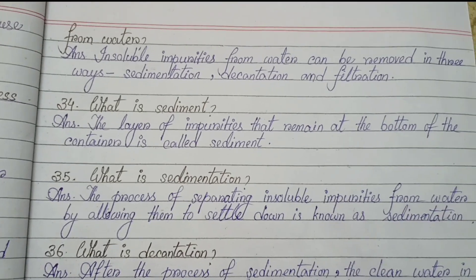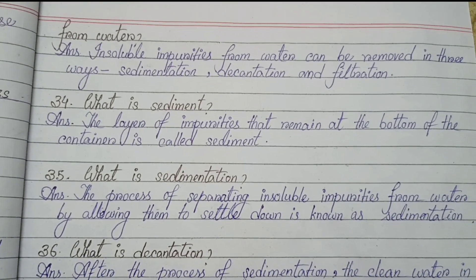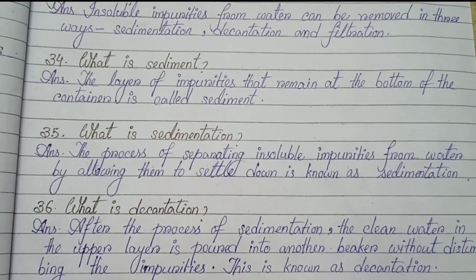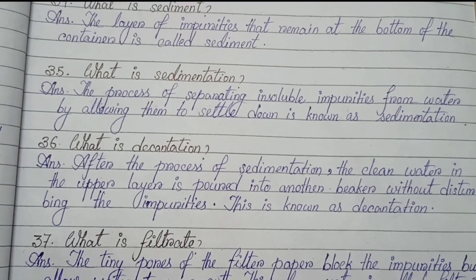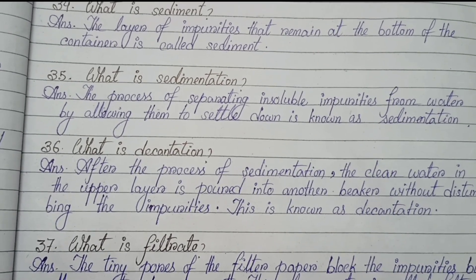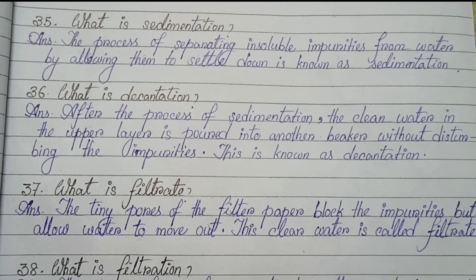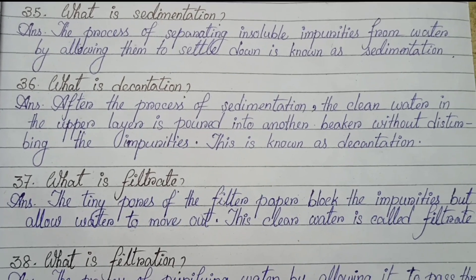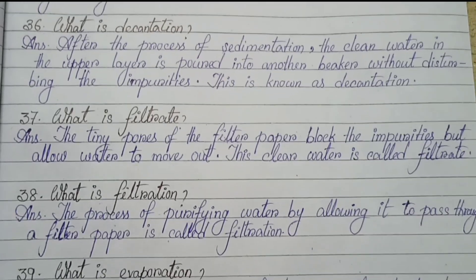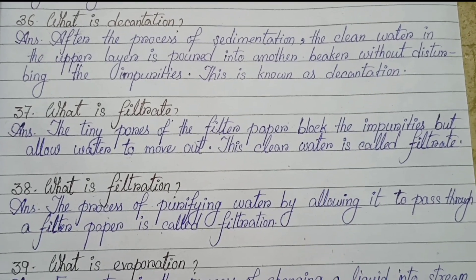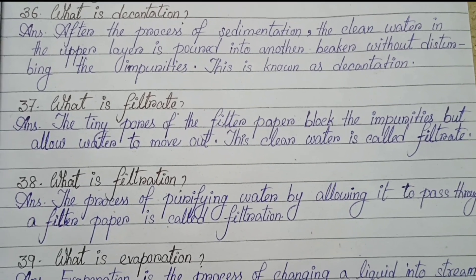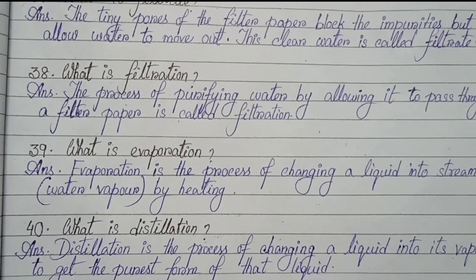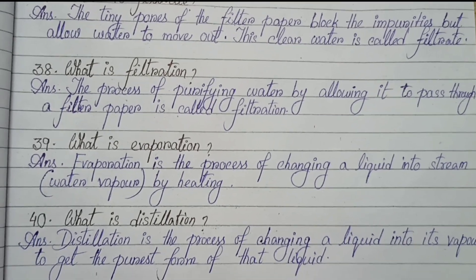Number 33: Which ways are used to remove insoluble impurities from water? Insoluble impurities from water can be removed in three ways — sedimentation, decantation and filtration. What is sediment? The layer of impurities that remain at the bottom of the container is called sediment. What is sedimentation? The process of separating insoluble impurities from water by allowing them to settle down is known as sedimentation. What is decantation? After sedimentation, the clean water in the upper layer is poured into another beaker without disturbing the impurities — this is known as decantation. What is filtration? The tiny pores of the filter paper block the impurities but allow water to move out; this clear water is called filtrate. The process of purifying water by allowing it to pass through a filter paper is called filtration.